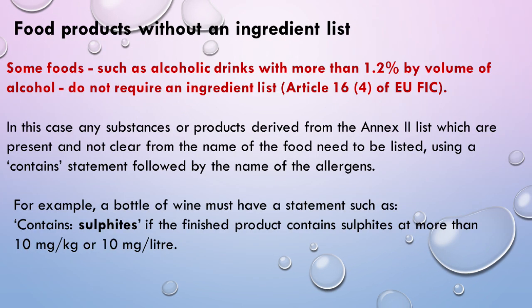Some foods, such as alcoholic drinks with more than 1.2% by volume of alcohol, do not require an ingredient list, per Article 16.4 of EU FIC. In this case, any substances or products derived from the Annex list which are present and not clear from the name of the food need to be listed using a content statement followed by the name of the allergens. For example, a bottle of wine must have a statement such as 'contains sulfite' if the finished product contains sulfite at more than 10mg per kilo or 10mg per liter.